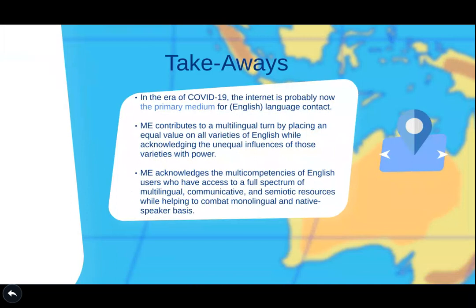Some takeaways from this presentation: in the era of COVID-19, the internet is probably now the primary medium for English language contact. Modulated English contributes to the multilingual turn by placing equal value on all varieties of English while acknowledging the unequal influences of those varieties with power. Modulated English also acknowledges the multi-competencies of English users who have access to a full spectrum of multilingual, communicative, and semiotic resources, while helping to combat monolingual and native speaker biases.